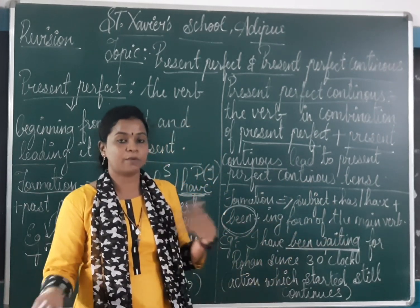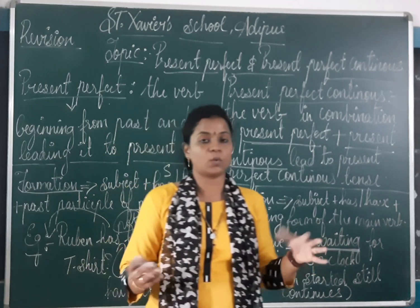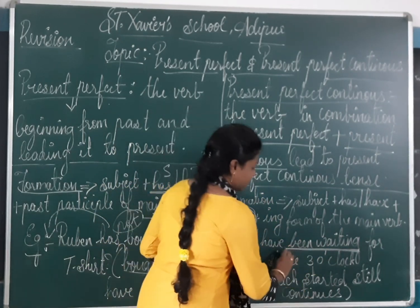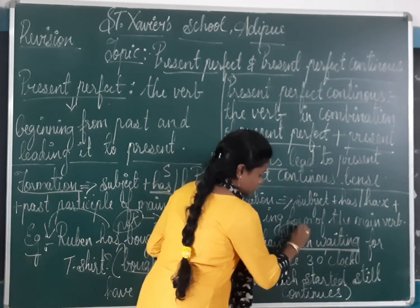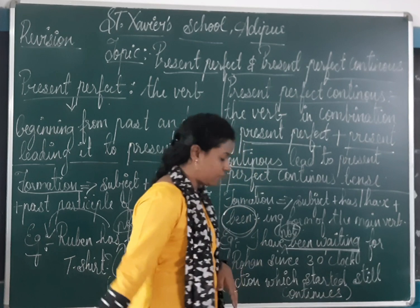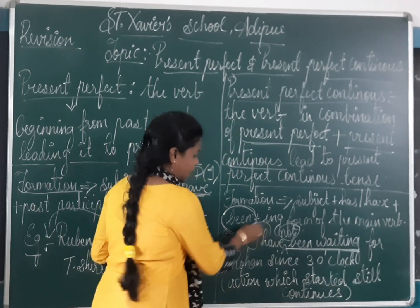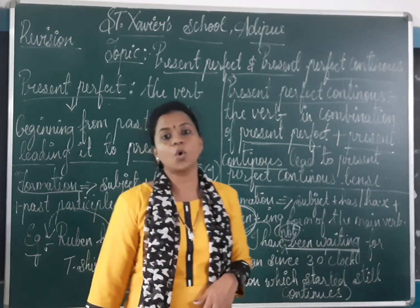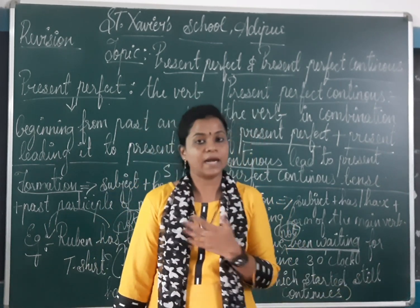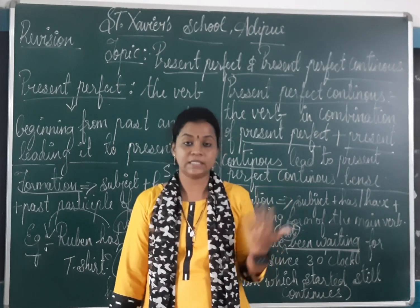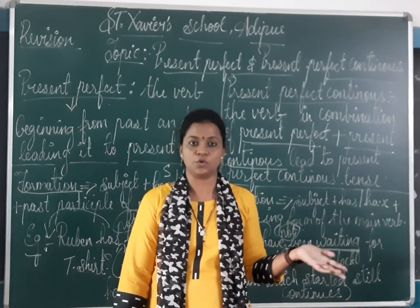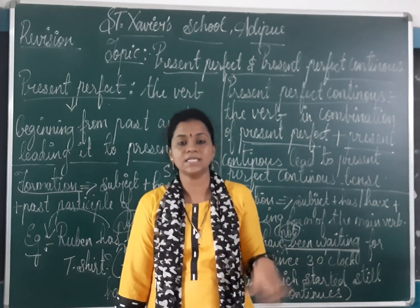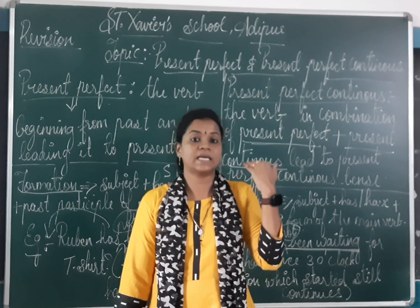In this also we have negative and question form. For negative, 'not' will come after 'has or have been'. And for the question form, 'has or have' will come in the beginning of the sentence. That I have already explained in detail. So now we will move on to our exercise from exercise 7 to 12.